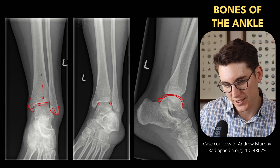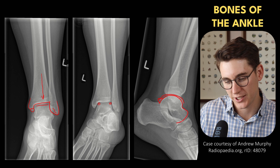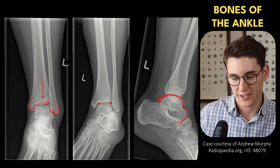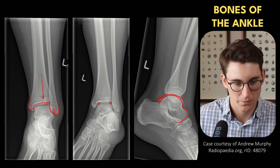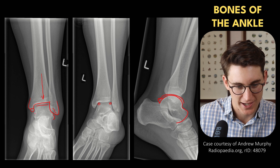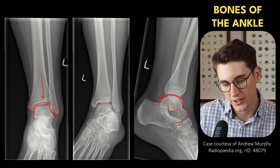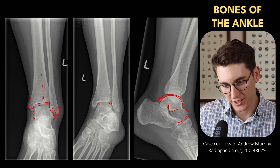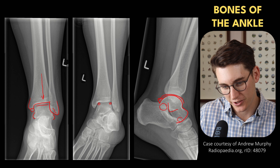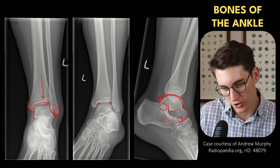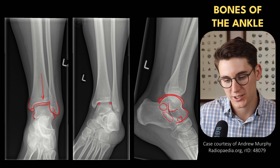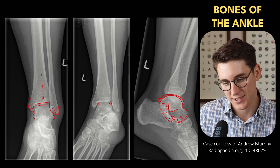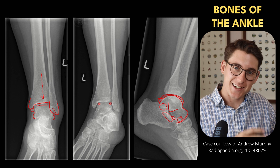Anteriorly, we've got the neck of the talus heading into the head of the talus, which has this anterior articular surface where the talus articulates with the navicular. The talus sits on top of the calcaneus. We can see both a lateral process and a medial process of the talus, and our lateral process makes this V-shaped mark on our lateral x-ray. The talus articulates with the calcaneus with a posterior facet and an anterior facet, and you can see a sclerotic margin which is an outcropping of our calcaneus known as our sustentaculum tali. There is also a joint between the talus and that sustentaculum tali, which extends out underneath the talus.